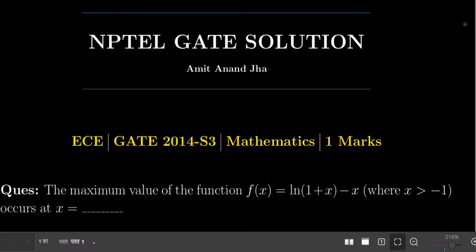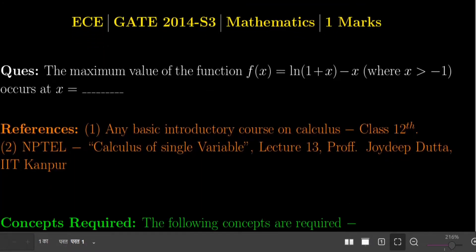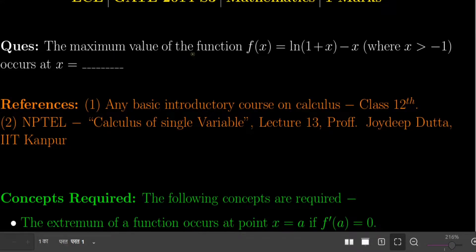Namaste all. This video is the solution for a question asked in the Electronics and Communication GATE exam of 2014, Set 3, in mathematics. The question was asked for one mark. The question says: find the maximum value of the function f(x) = ln(1 + x) - x, where x is greater than -1, and asks at which particular value of x the maximum occurs.